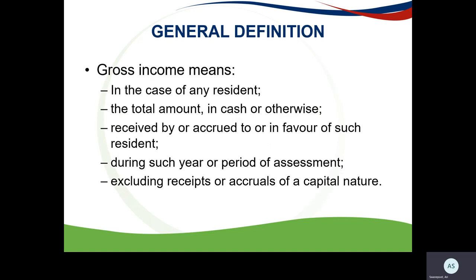The components of the gross income definition are: in the case of any resident, the total amount in cash or otherwise — so there must be an amount, and it doesn't have to be cash — received by or accrued to or in favour of such a resident, during such year or period of assessment, and excluding receipts or accruals of a capital nature.